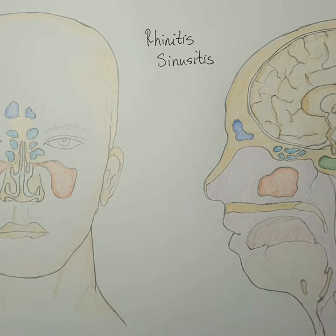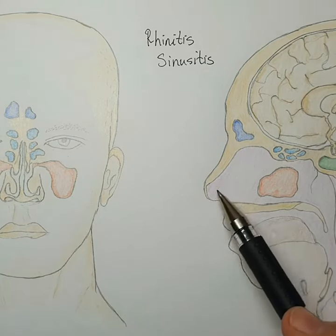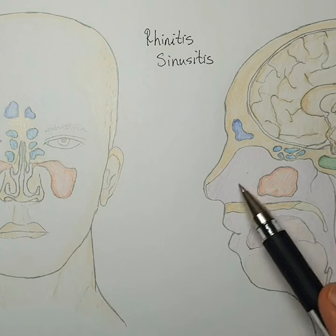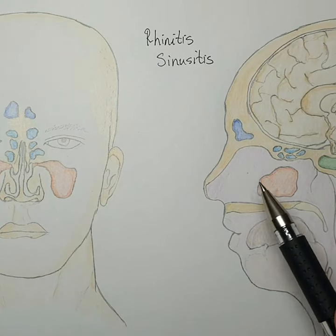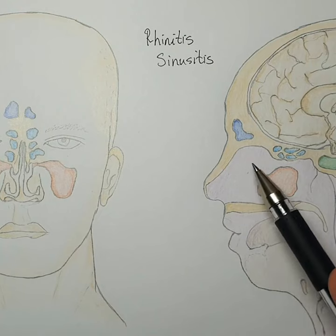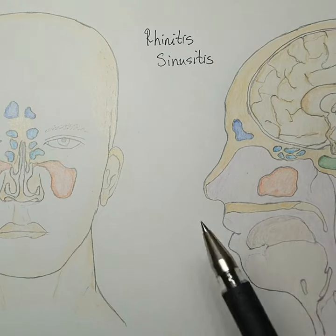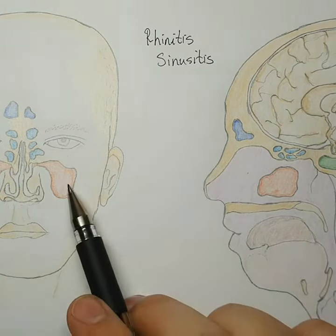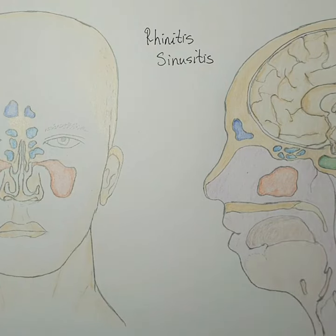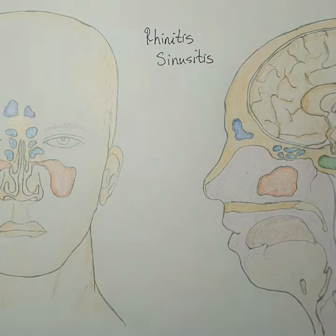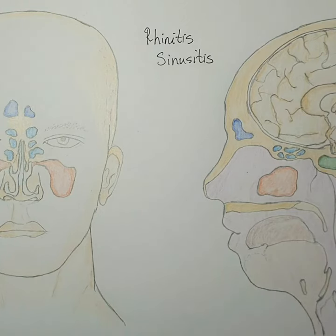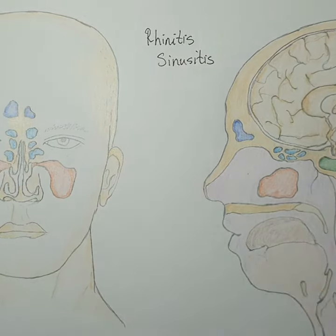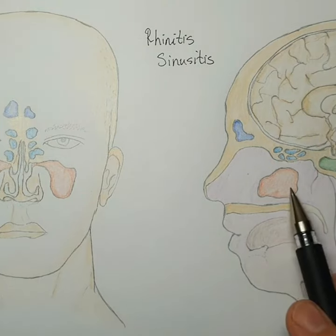Rhinitis is the inflammation of the nasal mucosa — the inner lining of the nasal cavity. Once there is inflammation in this inner lining, we call it rhinitis. But once the inflammation is present in the sinus cavities, which also have a mucosal lining, we call this sinusitis.